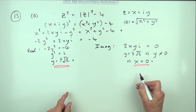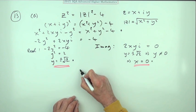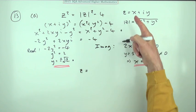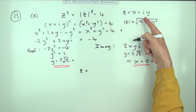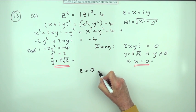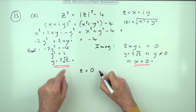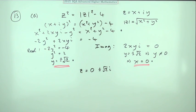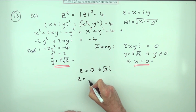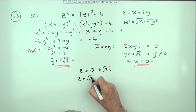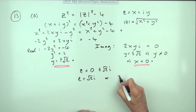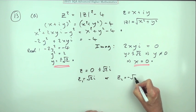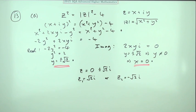It doesn't give a final mark for the final answer, but we might as well put it down. z equals x plus iy, x was zero and y is plus or minus root 2, so the two answers are z₁ equals root 2·i and z₂ equals negative root 2·i.